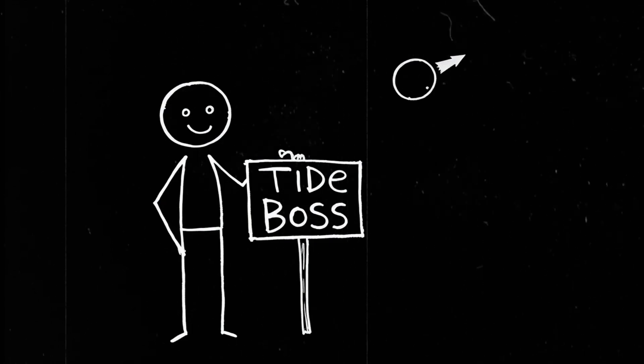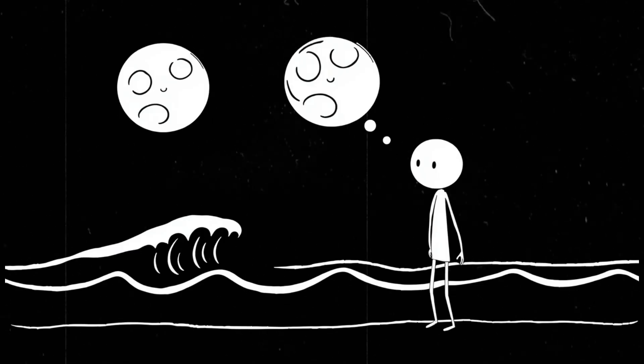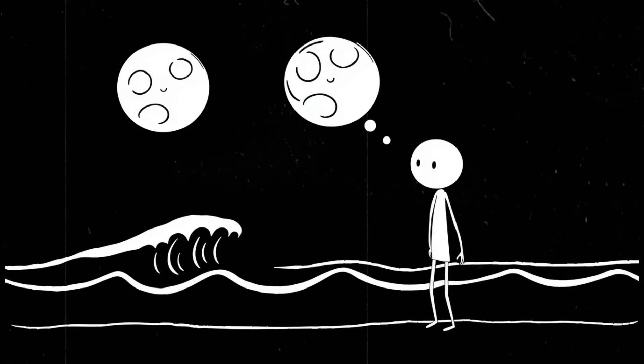Right now, the moon is basically the boss of Earth's tides. Its gravity pulls on our oceans, creating the daily rise and fall of waves. But add a second moon? Suddenly, the ocean doesn't know which way to move. Some days, we might get megatides, coastal cities experiencing water levels far beyond anything they were designed for.